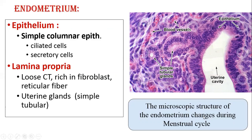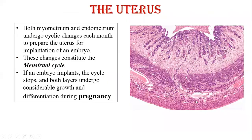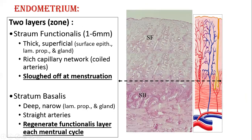The microscopic structure of endometrium changes during the menstrual cycle. Both myometrium and endometrium undergo cyclic changes; if an embryo implants, the cycle stops and both layers undergo considerable growth leading to pregnancy. Here we discuss the non-pregnant uterus. The whole endometrium is divided into two zones: the stratum functionalis, towards the lumen — one to six millimeters — and the stratum basalis, which is in contact with the myometrium.